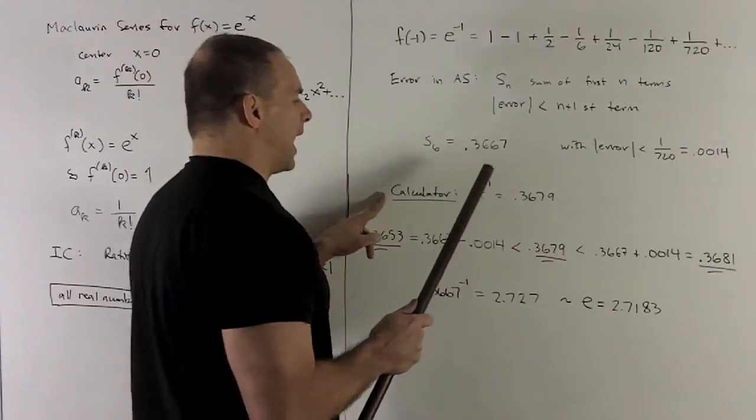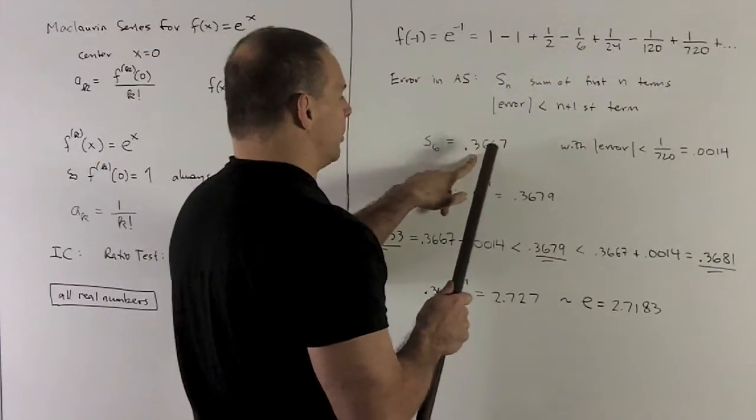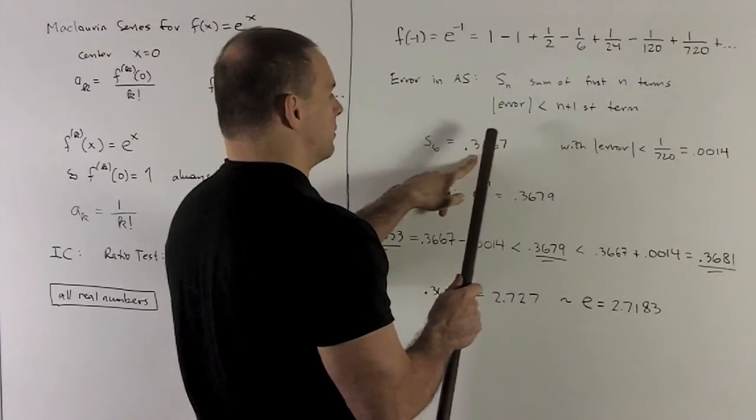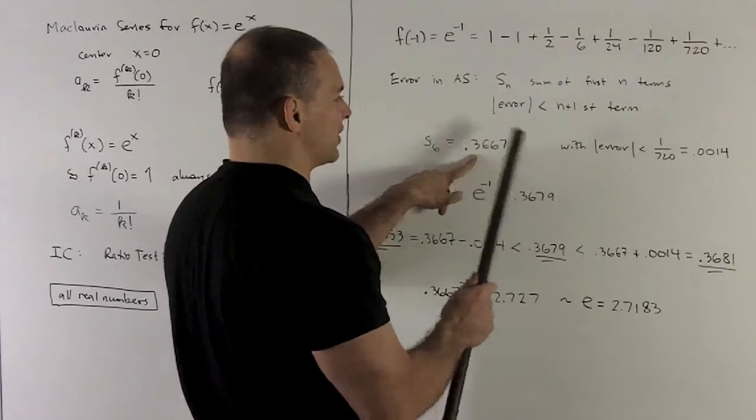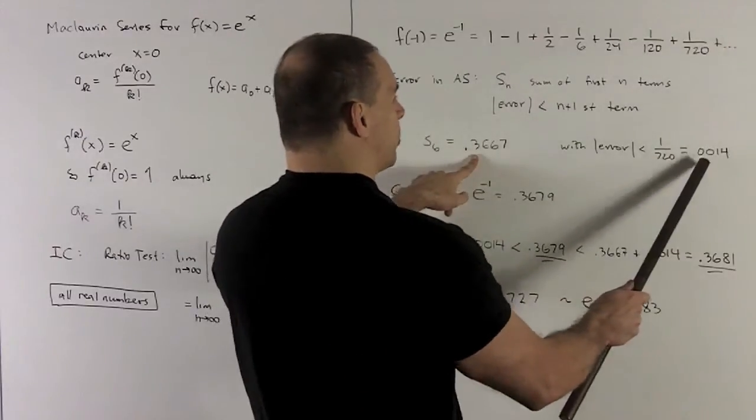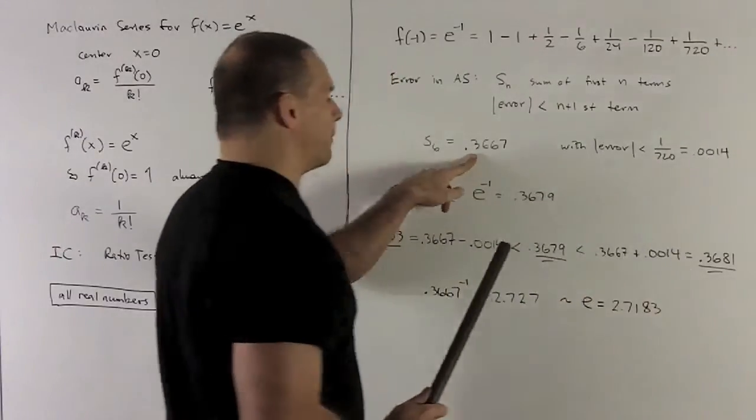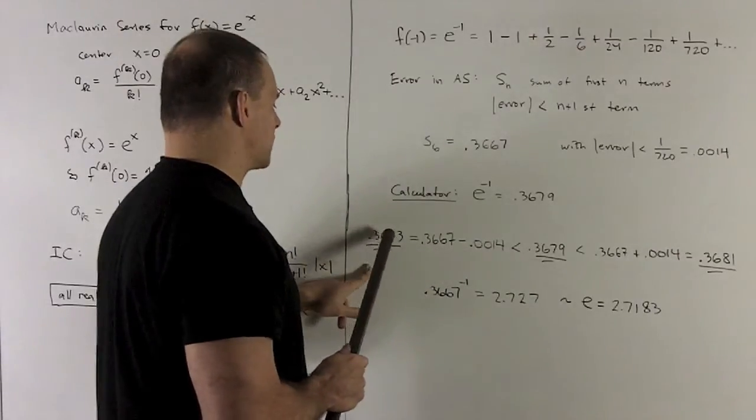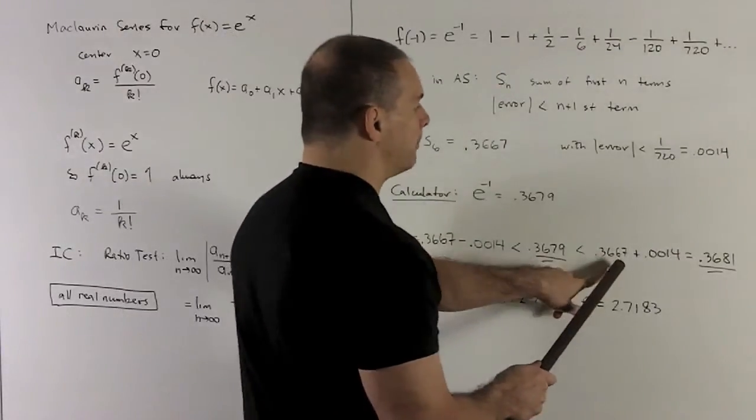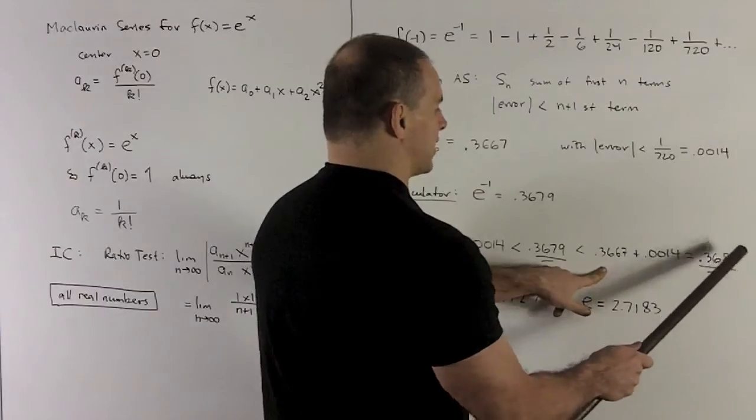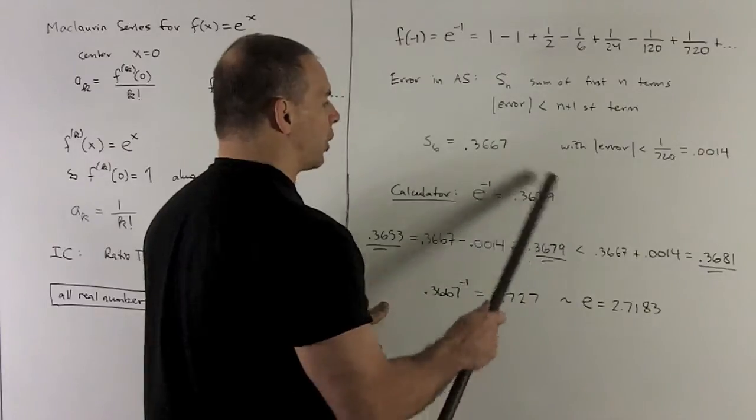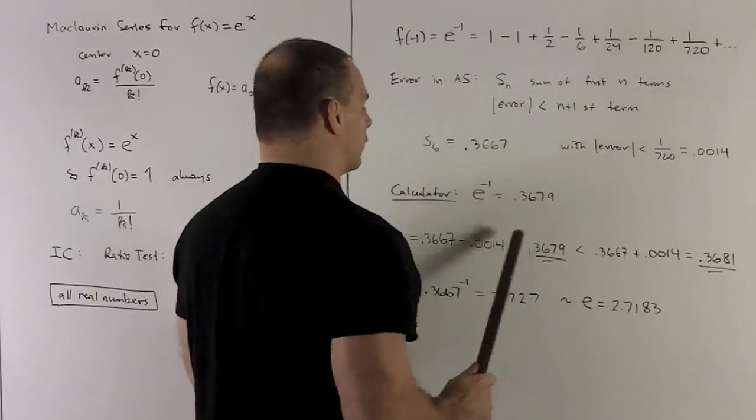our bound tells us that our answer is going to be in the interval, we take 0.3667 as the center, and I add plus or minus 0.0014 to that. So let's see what we get. If I subtract it off, we get 0.3653. If I add it, I get 0.3681. So you notice our 0.3679, which is the real answer, winds up being in our interval.